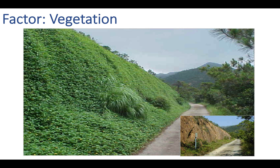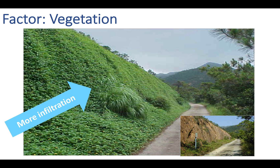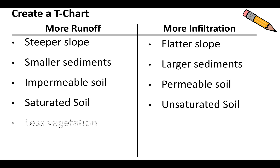Our last factor is vegetation — think of all the green plants and trees covering land. When you have a lot of vegetation, plants love to soak up water, so there's more infiltration and water goes into the ground more easily. When you completely remove the vegetation, there's more runoff because there are fewer plants to soak up that water, so it's more likely to stay on the surface. More runoff with less vegetation; more infiltration with more vegetation.